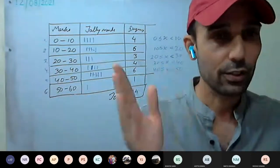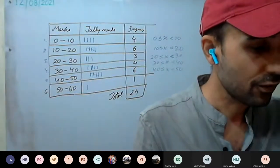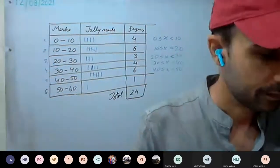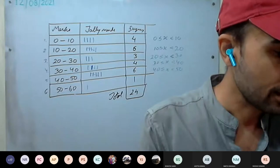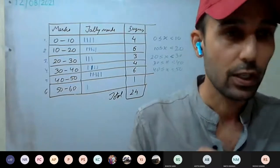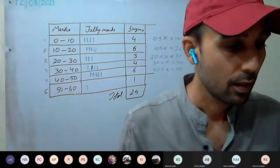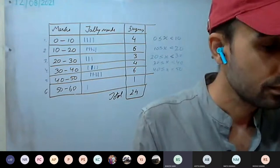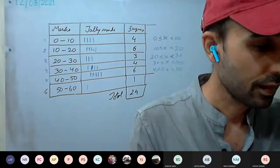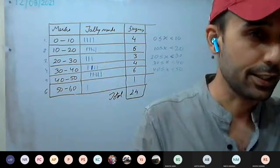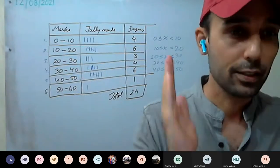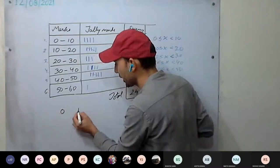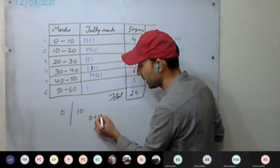In a class interval 35 to 46, the lower limit is 35 and the upper limit is 46. Find the actual lower class limits, upper class limits, and mid values of the classes. Class mark means the middle value — if we have 0 and 10, the class mark is (0 + 10) ÷ 2 = 5.